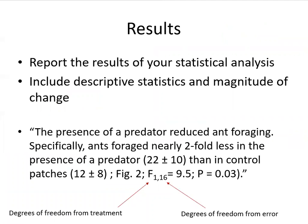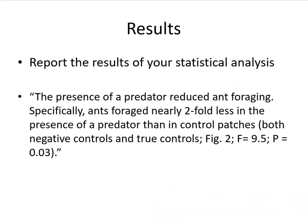You should report your results and specifically your statistical analysis, including descriptive statistics with a magnitude of change. For example: the presence of a predator reduced ant foraging — specifically, ants foraged nearly two-fold less in the presence of a predator, mean of 22 plus or minus 10 (standard deviation), than in control patches, mean of 12 plus or minus 8, with an F value of 1 and 16 and a P value of 0.03. If you need help with reporting, there will be references on the lab PowerPoint, as well as the PowerPoints from the previous weeks.